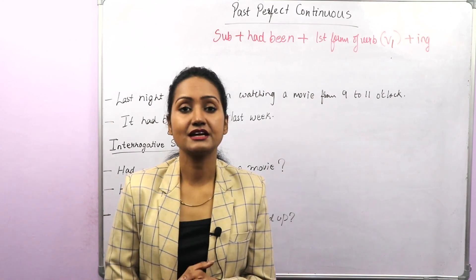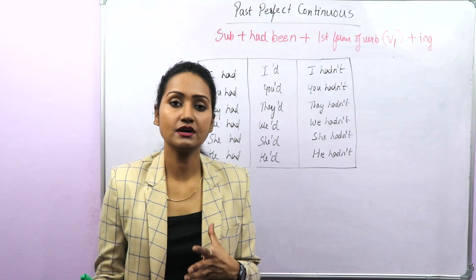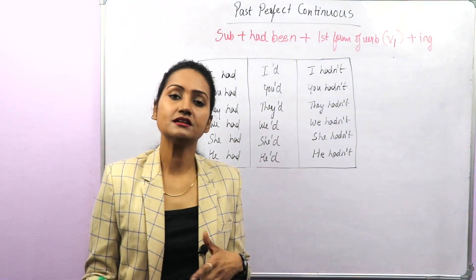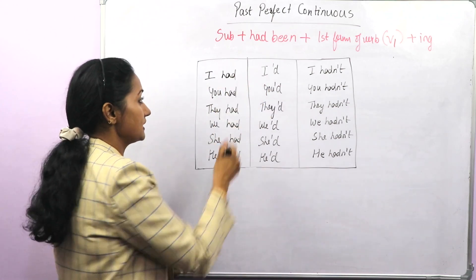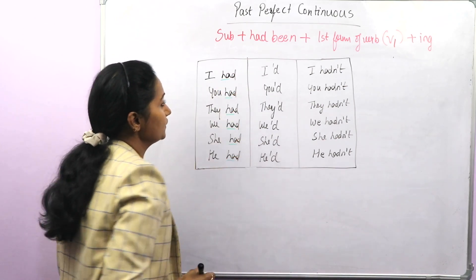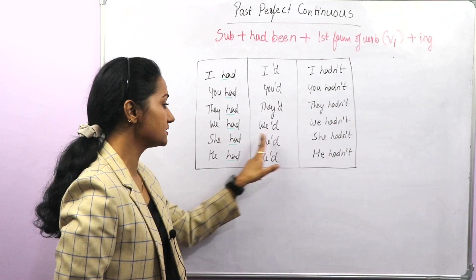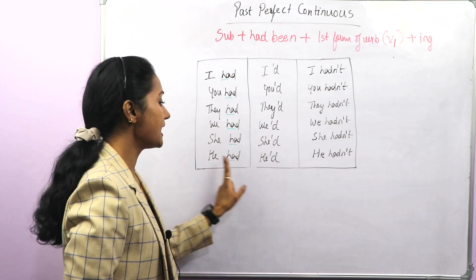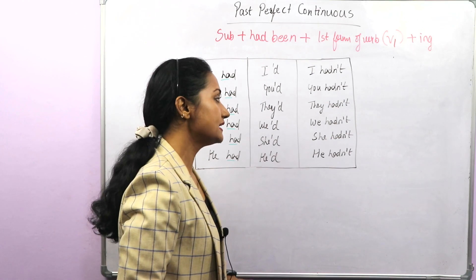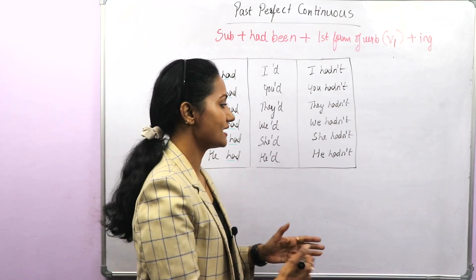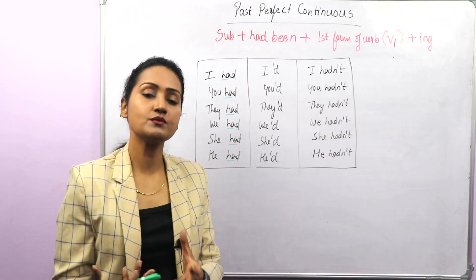Please practice, and if you have any doubts, please mention in the comment section. Let's go through the contractions — I tell about contractions in each and every video, but let's revise once again. 'I had' is 'I'd' — you have to remove H-A. So: I'd, you'd, they'd, we'd, she'd, he'd. For negatives: I hadn't, you hadn't, they hadn't, we hadn't, she hadn't, he hadn't. These are the contractions which we use in informal conversation, not in formal communication.